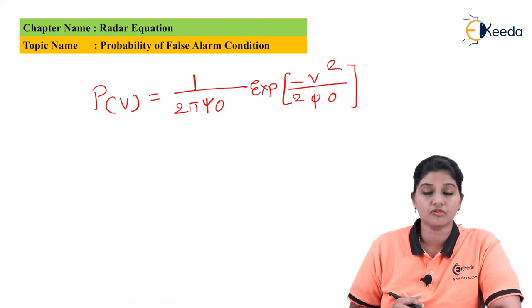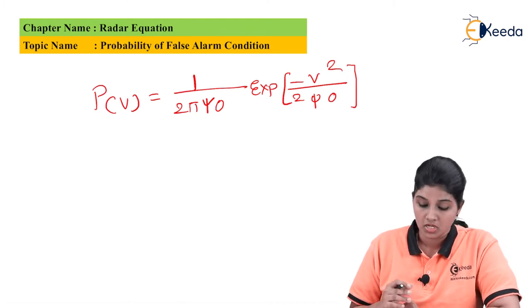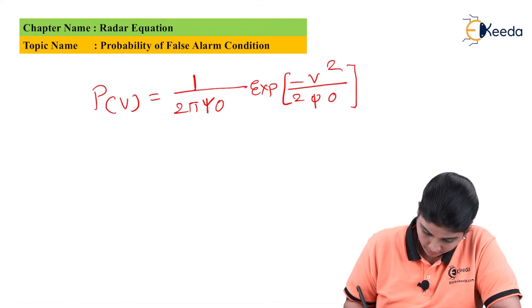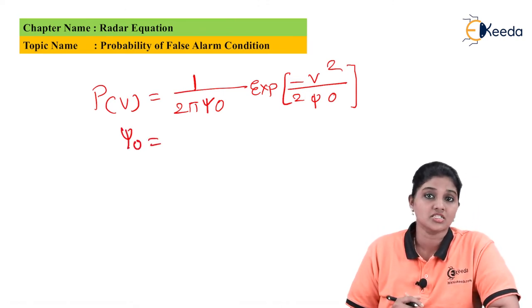The value of v is the probability of finding out the voltage between plus v to minus v. Now next is σ₀ and it is considered as a mean value.